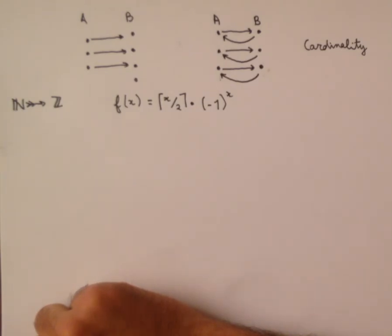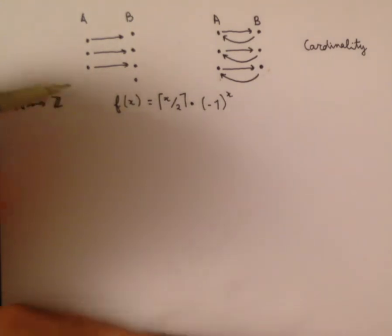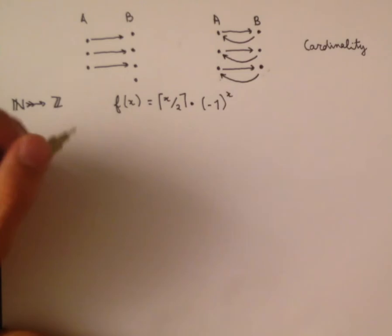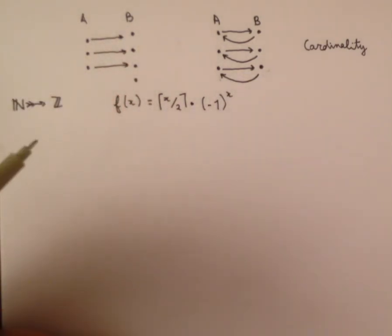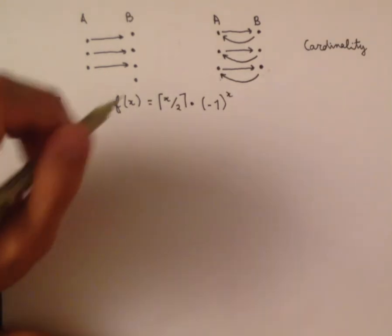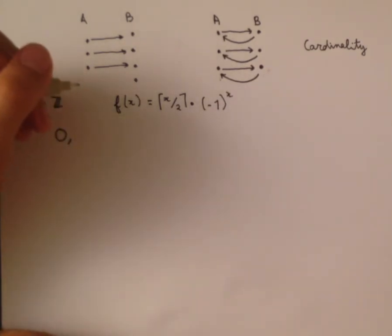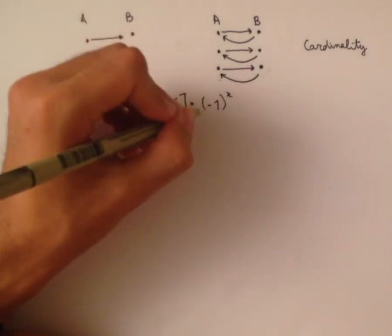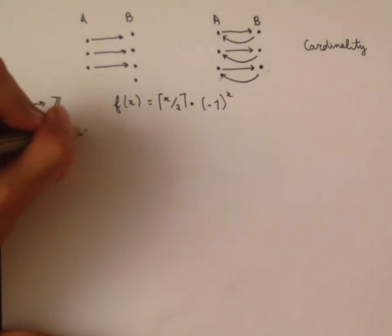The ceiling of a number is the lowest integer that is greater than or equal to the number. So let's see what this function does for the first few inputs. f(0) is the ceiling of 0/2, which is the ceiling of 0, which is 0, and whatever we multiply that by, we get 0. f(1) is the ceiling of 1/2, which is 1, and we multiply that by (−1)^1, which is −1, giving us −1.